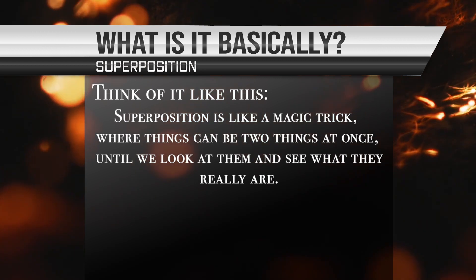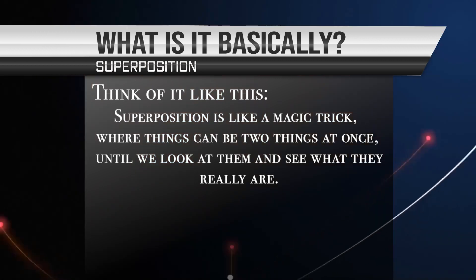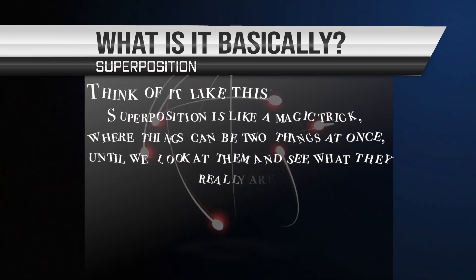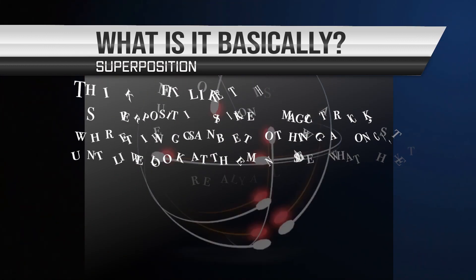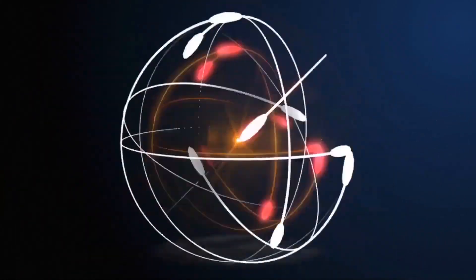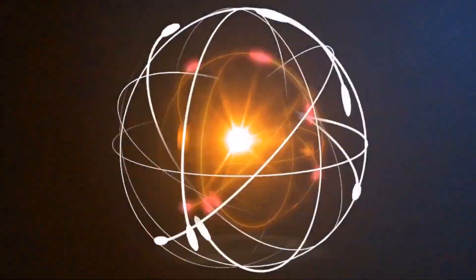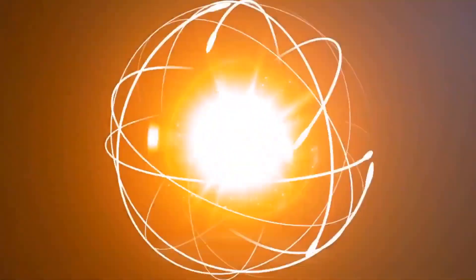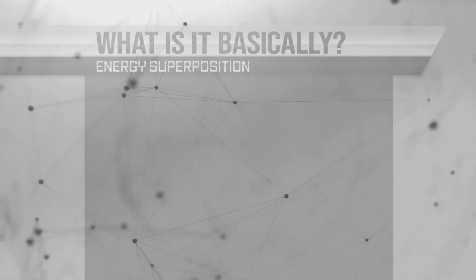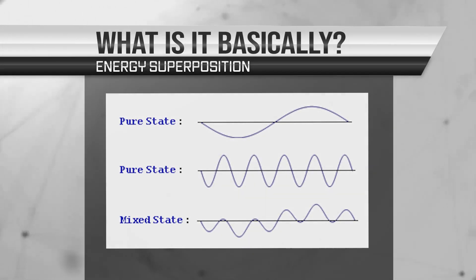One way to understand superposition is to consider the example of an atom. In classical physics, an atom can only exist in a single energy level at a time. However, in quantum physics, an atom can exist in multiple energy levels at the same time. This is known as energy superposition.